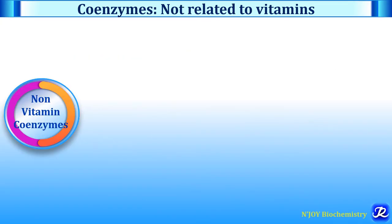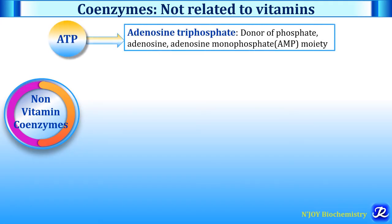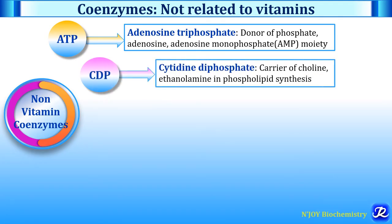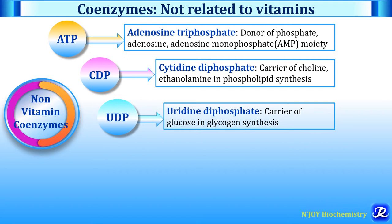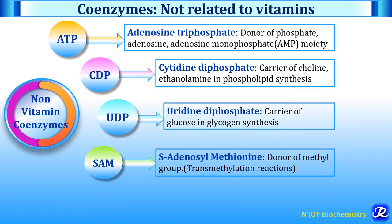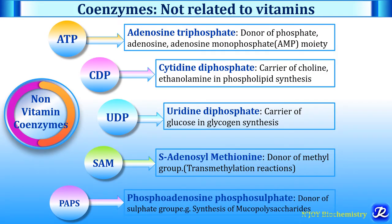There are various other coenzymes not related to vitamins. For example, ATP (adenosine triphosphate) is the donor of phosphate group, adenosine, and AMP moiety. CDP (cytidine diphosphate) is the carrier of choline and ethanolamine in phospholipid synthesis. UDP (uridine diphosphate) is the carrier of glucose in glycogen synthesis. SAM (S-adenosylmethionine) is the donor of methyl group in transmethylation reactions. PAPS (phosphoadenosine phosphosulfate) is the donor of sulfate group required in the synthesis of mucopolysaccharides.